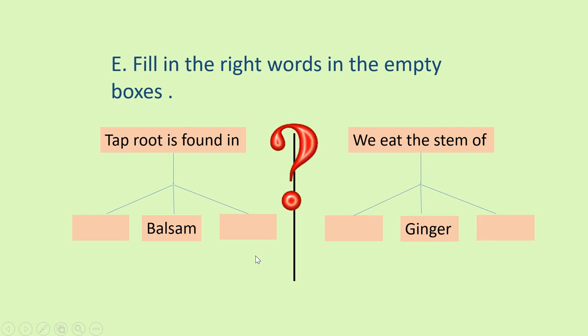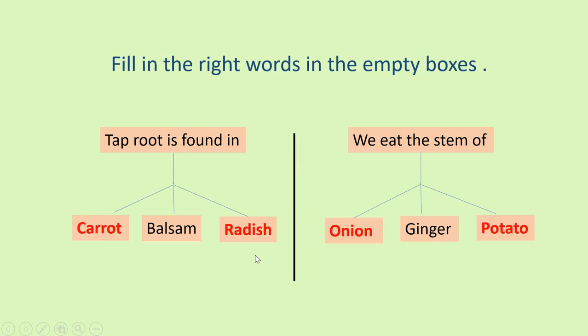Okay. What are these? Have you thought? Okay. Let's answer. Yes. Now, tap root is found in carrot, radish and balsam. And we eat the stem of onion, potato and ginger.